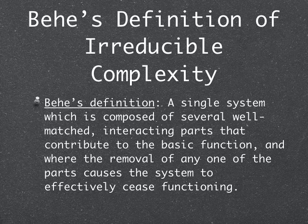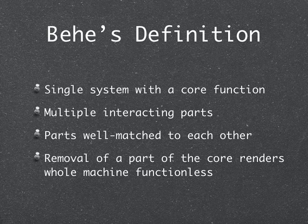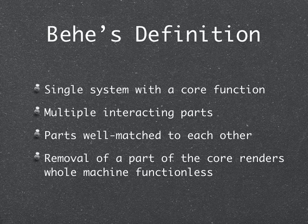An irreducibly complex system is a single system which is composed of several well-matched, interacting parts that contribute to the system's basic function, and where the removal of any one of these parts causes the system to effectively cease functioning. So we have a single system with a core function, multiple interacting parts, parts that are well-matched to each other, and the removal of any part of the core renders the whole machine functionless.